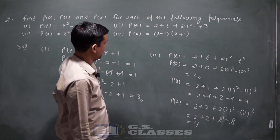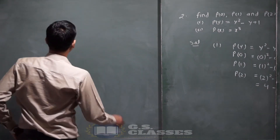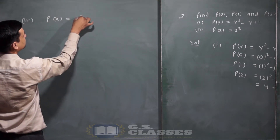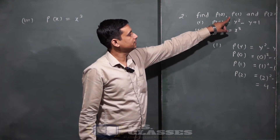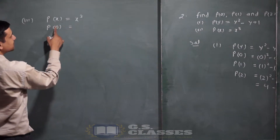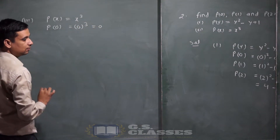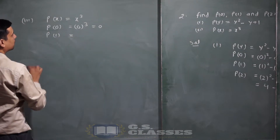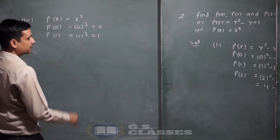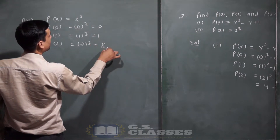Next third part: p(x) = x³। p(0) = 0³ = 0, p(1) = 1³ = 1, p(2) = 2³ = 8। बिल्कुल आसान वाले questions हैं।